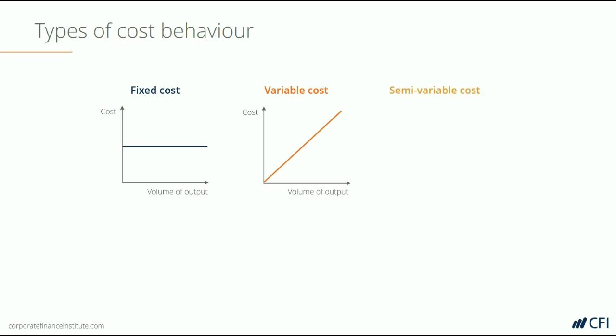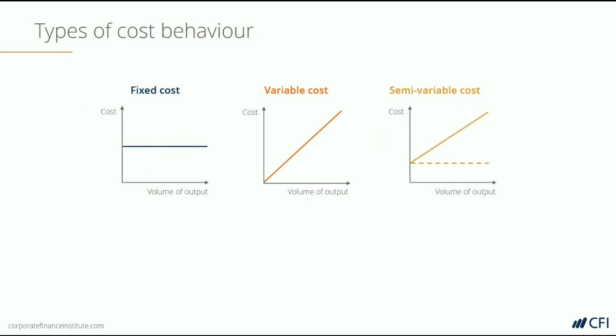And finally, there's semi-variable — or sometimes called semi-fixed — where you have a combination of fixed and variable costs. What this typically means is that a cost is fixed up until a certain point and then becomes variable.